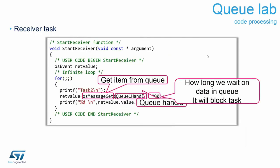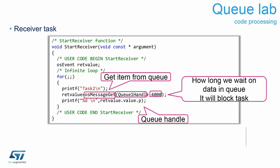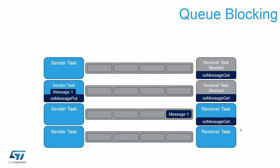The receiver task gets the return value from the queue using osMessageGet with a timeout of, say, four seconds — longer than the sender's one-second period. It then prints the received value from the returned osEvent structure. This way you can extract what was sent to the queue and print it to the screen. Queue operations are typically blocking when you put data in or get data out.